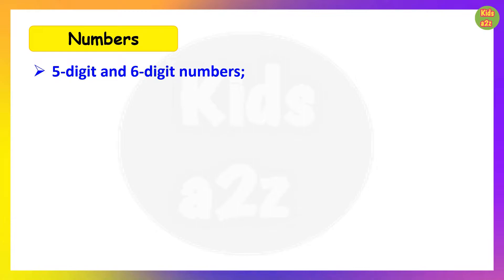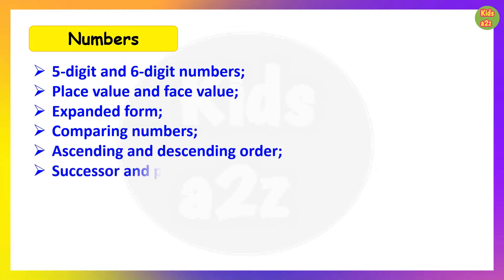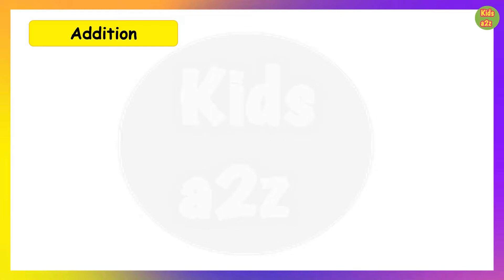Under Numbers, in previous classes they learned up to four digit numbers. Now in Class 4 they will learn five digit and six digit numbers, place value and face value, expanded forms of numbers. In Class 3 they learned how to compare two four digit numbers; now using the same rule they will learn how to compare two five or six digit numbers, ascending and descending order, successor and predecessor, forming greatest and smallest numbers, and Roman numerals.